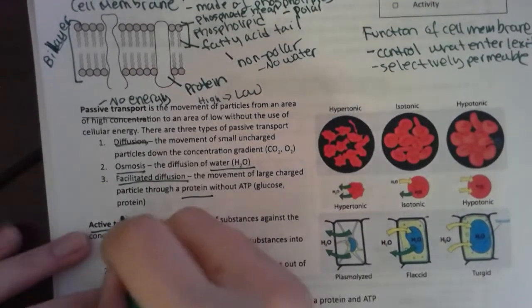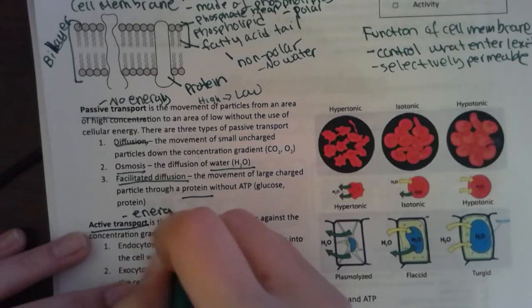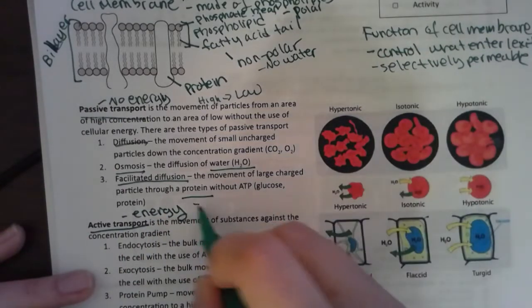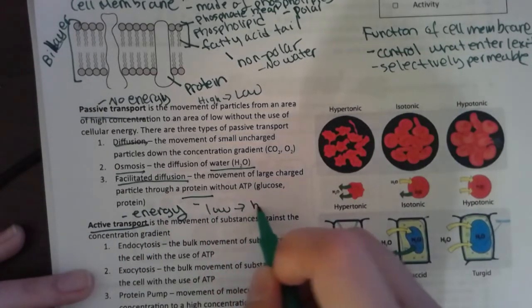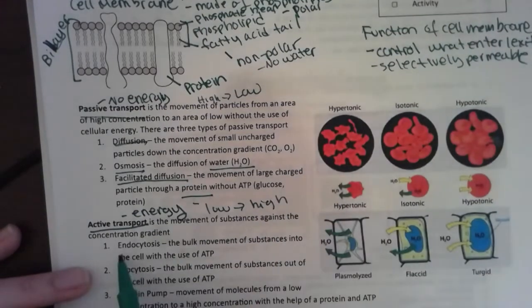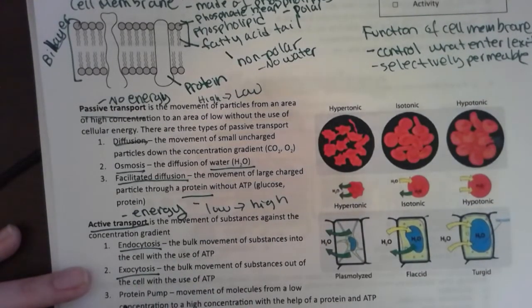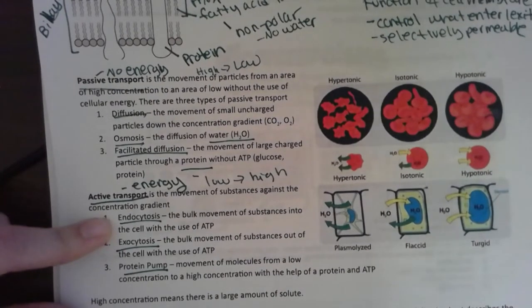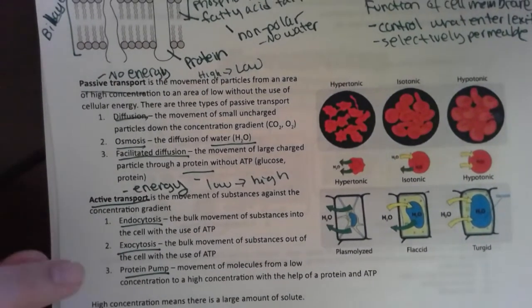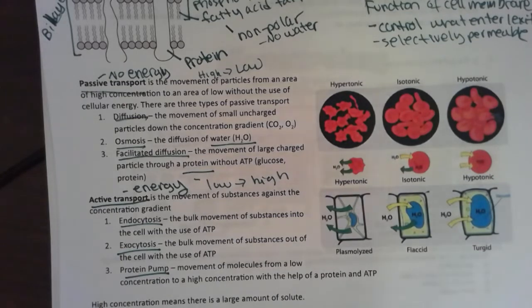Active transport means that I am using energy and I may be going from a low concentration to a high. There are three types: endocytosis, exocytosis, and a protein pump. Endocytosis, you guessed it, is when I'm bringing super large particles into the cell that can't pass through the membrane by itself.